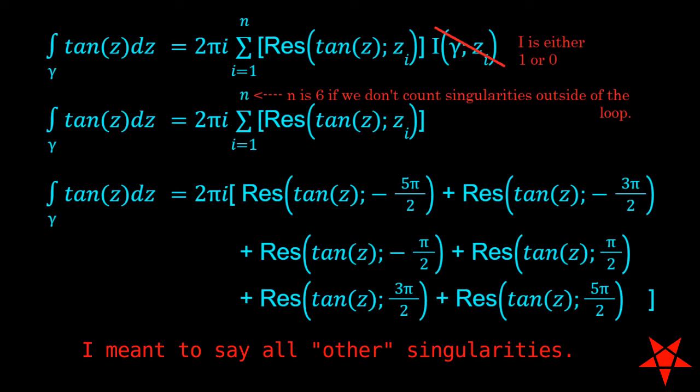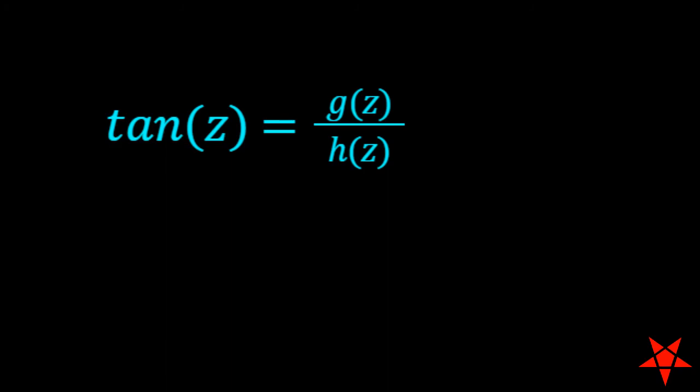So what sorts of residues are we dealing with here? Our first line of attack in answering such questions is to look for a way to separate the numerator from the denominator, and the structure of tangent of z makes this quite simple to do.